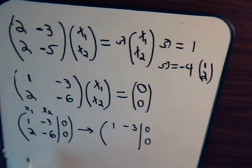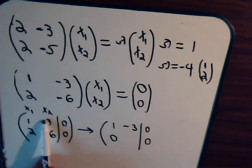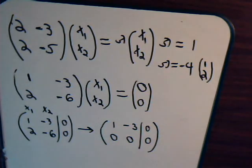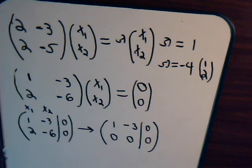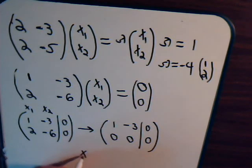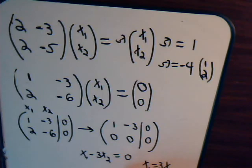Multiplying by minus 2: negative 2 plus 2 is 0. Negative 2 times negative 3 is plus 6, giving 0 here as well. So the lead variable is x1 and the free variable is x2. We want to express the lead variable in terms of the free variable: x1 minus 3 times x2 equals 0.